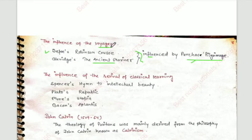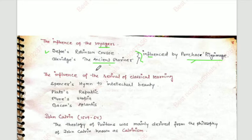The works influenced by voyagers are: first, Daniel Defoe's Robinson Crusoe, and second, Coleridge's Rime of the Ancient Mariner. We can see the impact of voyagers clearly in Coleridge's Ancient Mariner.